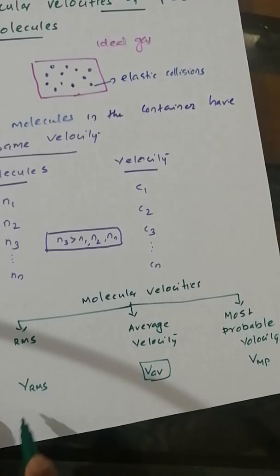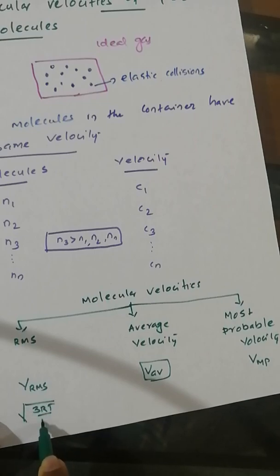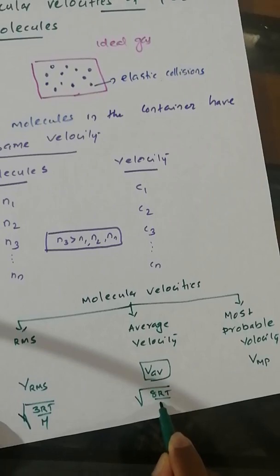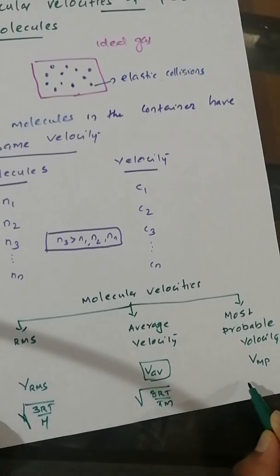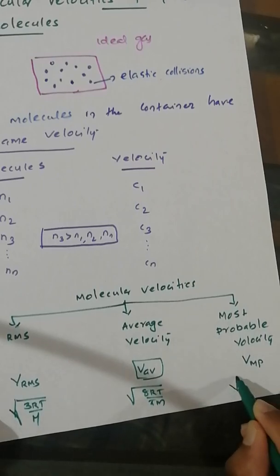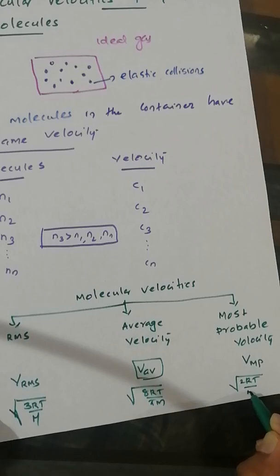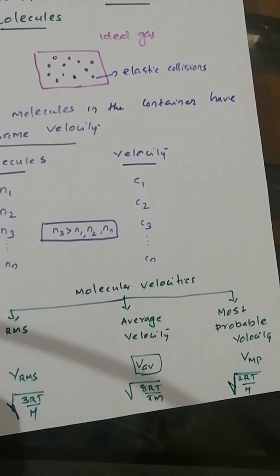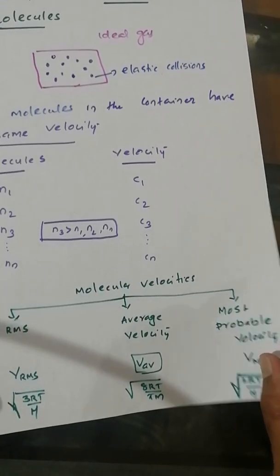The equations are as follows: V-rms equals the square root of 3RT by M; V-average equals the square root of 8RT by pi M; and V most probable equals the square root of 2RT by M. So the three equations are: square root of 3RT/M, square root of 8RT/πM, and square root of 2RT/M.